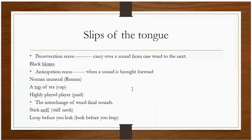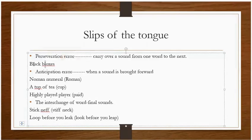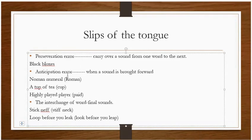We can also have other errors that are part of slip of the tongue. We have a preservation error. In a preservation error, we carry over a sound from one word to the next — for example, 'black bloxes'. The 'bl' sound has been carried over to the next word as well. It was 'black boxes', but we preserved the 'bl' sound and took it over to the next word.